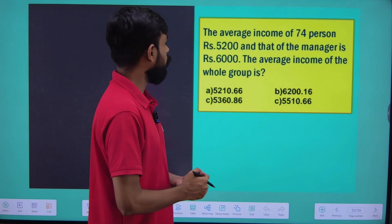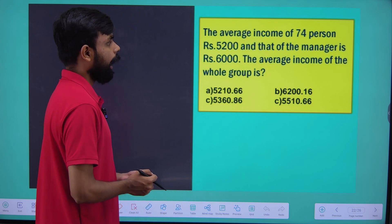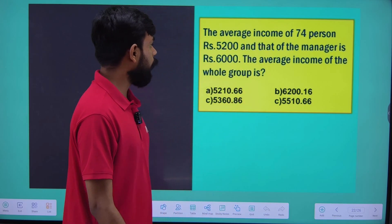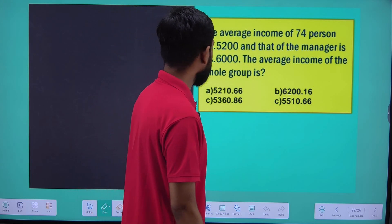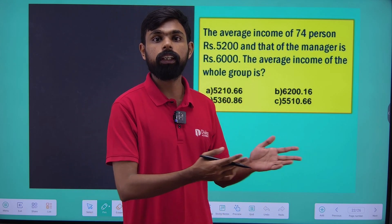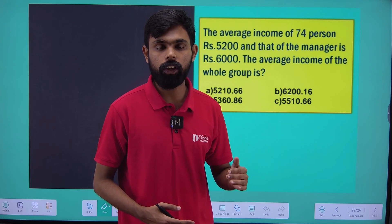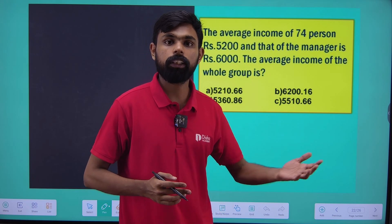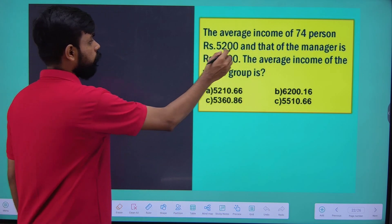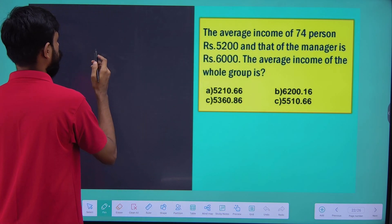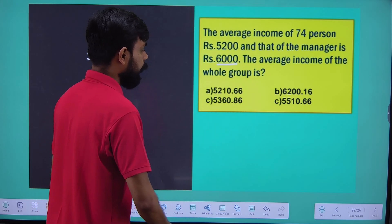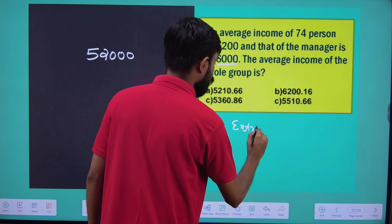The average income of 74 persons is IYR 300, and that of the manager is RR. The average income of the whole group — a teacher has an average, and our average income is higher than 1. The extra is equal to 100. The average income of the whole group is IYR 200.